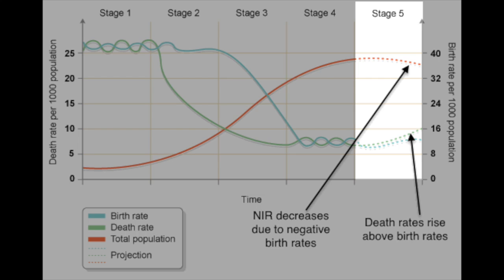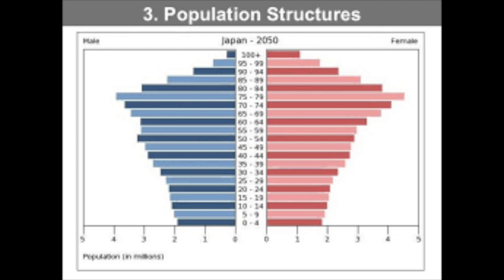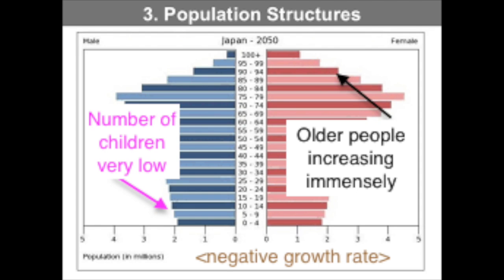In a previous lesson about the demographic transition model, we talked about a phantom or hypothetical stage five where we see negative population growth. Here's a pyramid that gives a good example of that — Japan. We can see that it's very narrow at the base and very wide at the top. They're having fewer and fewer children and in fact have negative population growth. That means fewer and fewer workers to take care of the older people and fewer workers for jobs. Japan doesn't really allow immigration, so they're finding they have more jobs than workers — a great case study for what happens in a stage five country. Again, we have a very wide top and a very narrow bottom.